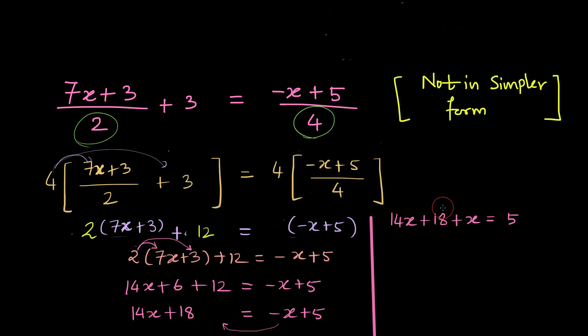Now let us transpose this plus 18 to the right and since we are transposing it to the other side its sign will change. So 14x plus x is equal to 5 minus 18 and I get 15x on the left hand side and minus 13 on the right hand side. After we divide both the sides by 15 I get x is equal to minus 13 by 15.